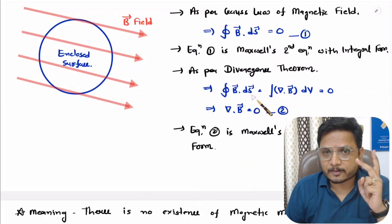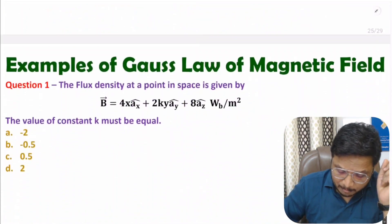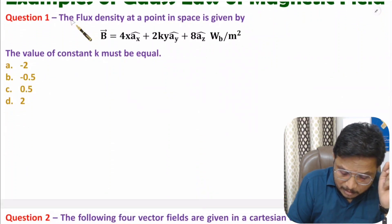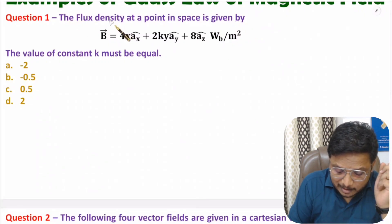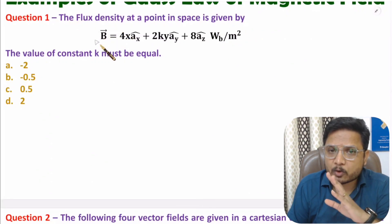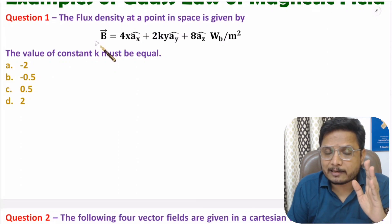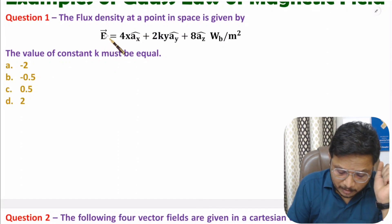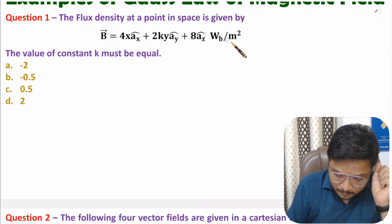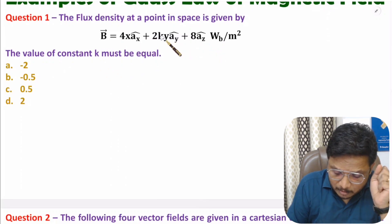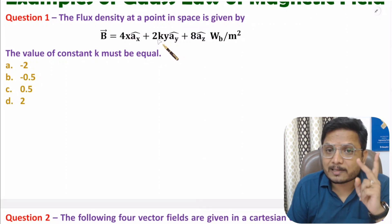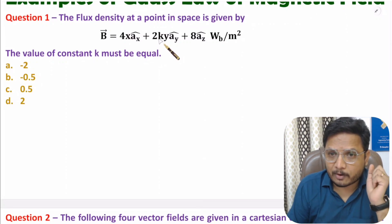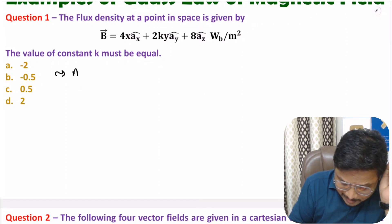In problem number one, the flux density at a point in space is given. One should know that flux density is magnetic field only — there is no difference between magnetic flux density and magnetic field, both are the same. The magnetic field is given to us and we need to find the value of constant k using Maxwell's second equation in differential form.